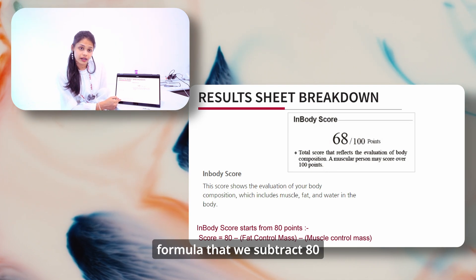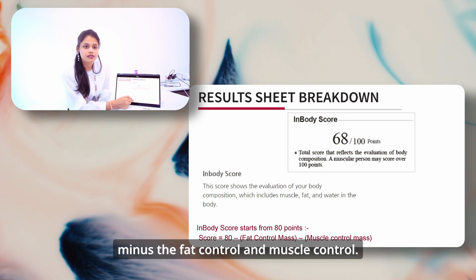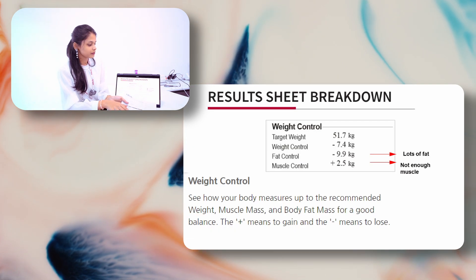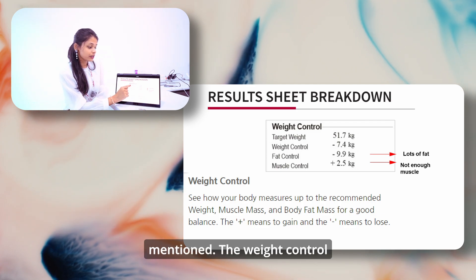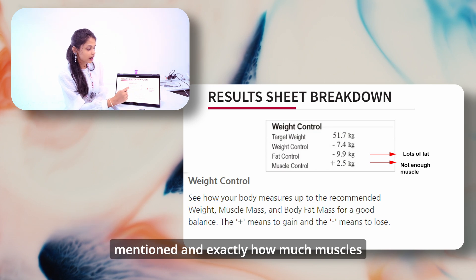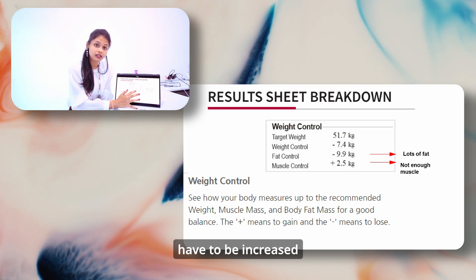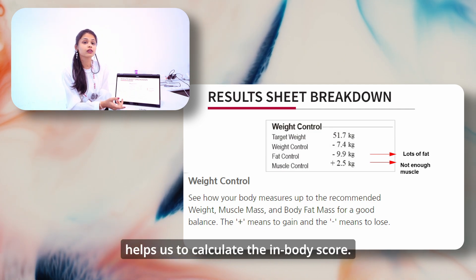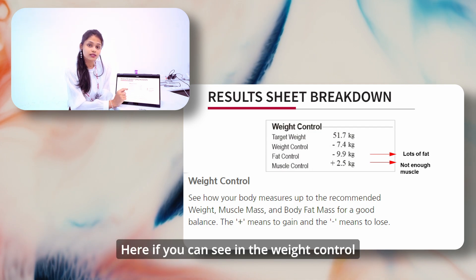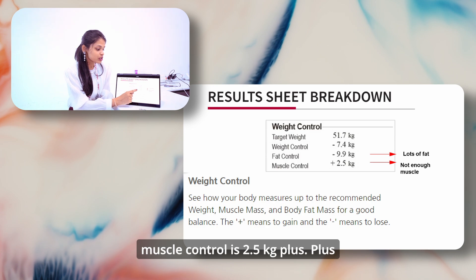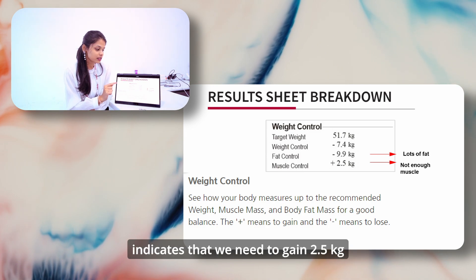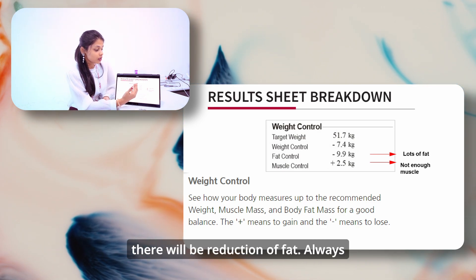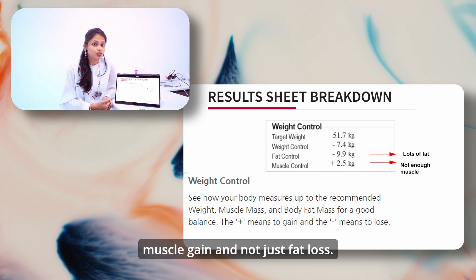The InBody score formula: we subtract 80 minus the fat control and muscle control. There is a parameter called weight control, which mentions the target weight, how much weight needs to be reduced, how much muscle has to be increased, and how much fat has to be decreased. In this example, the muscle control is 2.5 kg plus, meaning we need to gain 2.5 kg of muscle, and in that process there will be a reduction of fat. Always the main focus should be muscle gain and not just fat loss.